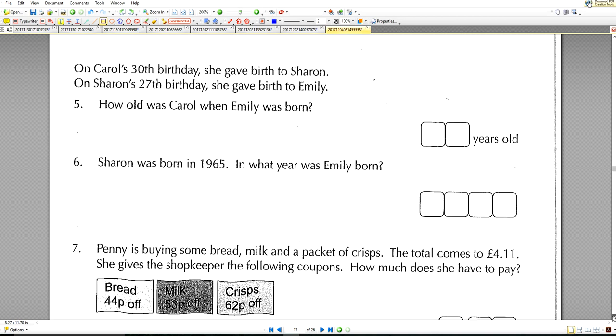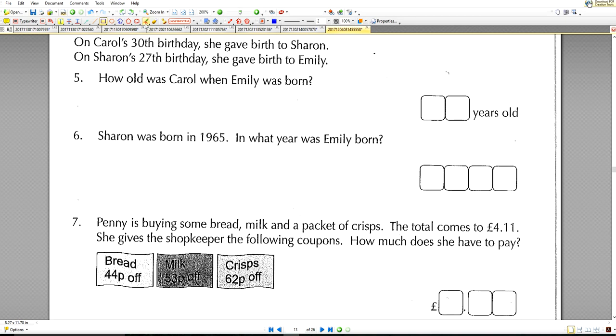Question number five. On Carol's 30th birthday she gave birth to Sharon. On Sharon's 27th birthday she gave birth to Emily. How old was Carol when Emily was born? She was 30 when she had a daughter, and then her daughter was 27, so 30 plus 27 gives you 57.